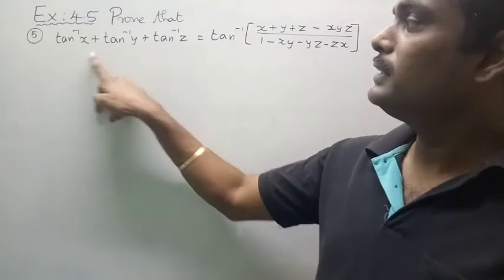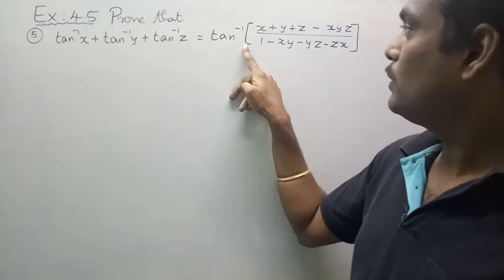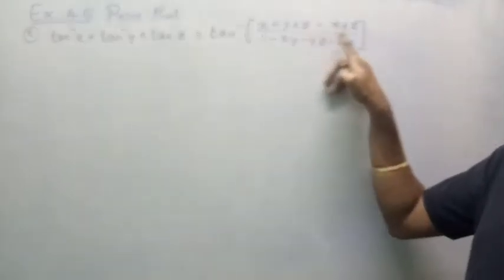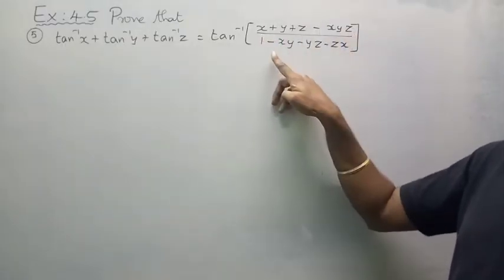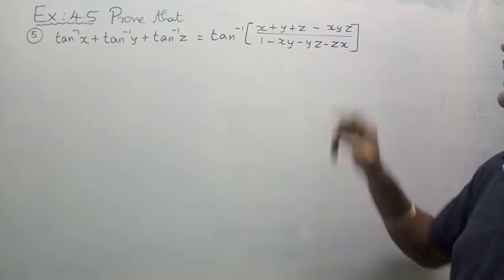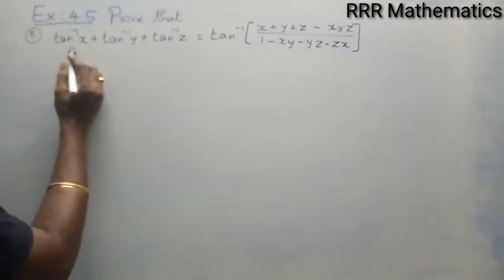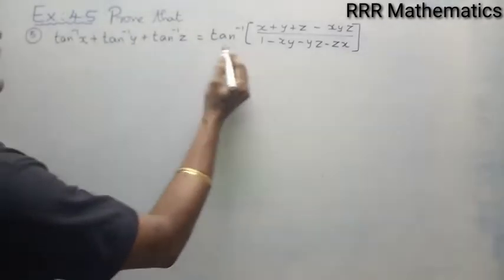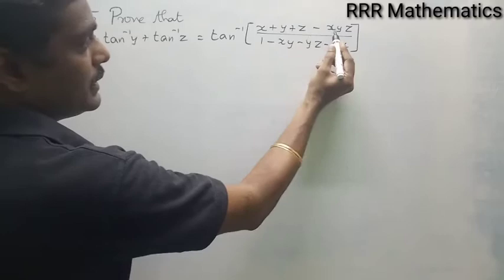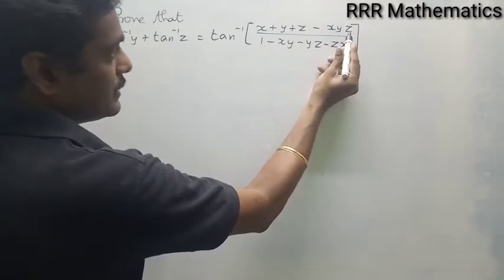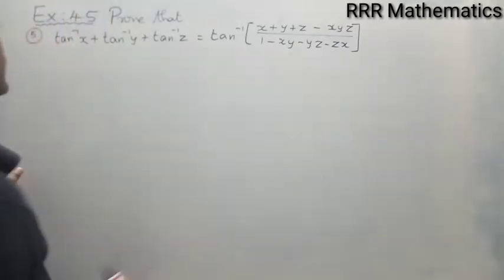Prove that tan inverse x plus tan inverse y plus tan inverse z, which is equal to tan inverse of x plus y plus z minus xyz, whole divided by 1 minus xy minus yz minus zx.